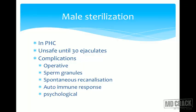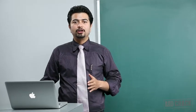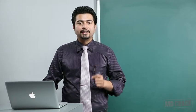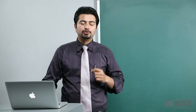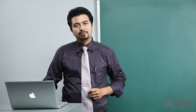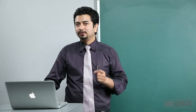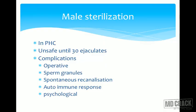No-scalpel vasectomy can also be done at a PHC level. An important precaution to tell the couple: sperms can still be present in semen for up to 30 ejaculates after vasectomy. Therefore, the couple should use barrier methods of contraception — most likely the condom — for up to 30 ejaculates. Otherwise vasectomy is bound to fail, and a pregnancy can still occur after vasectomy.